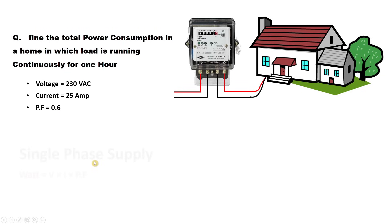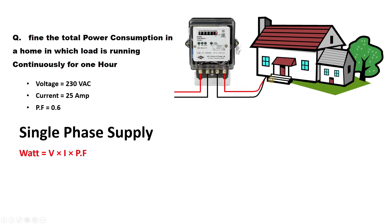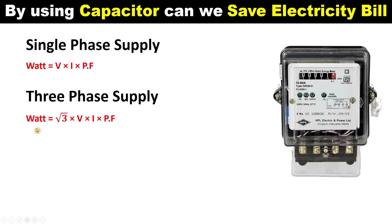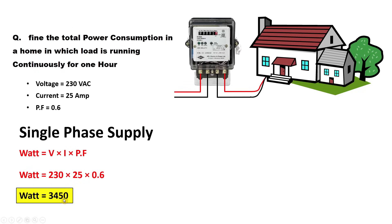To solve this, we use the single-phase power formula: Power = Voltage × Current × Power Factor. Putting in the values — 230 volts, 25 amperes, and power factor 0.6 — the result is 3450 watts, which equals 3.45 units. So in this home, in one hour, 3.45 units of power are consumed.